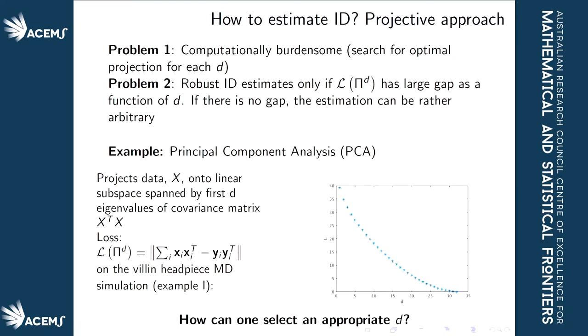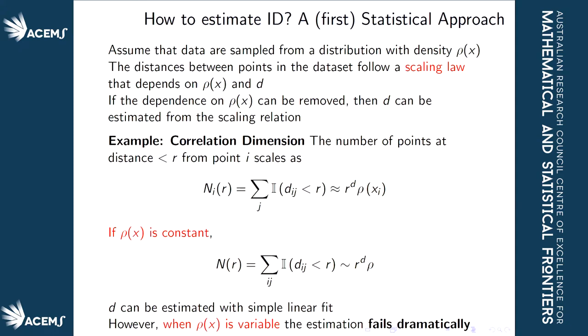We try a statistical approach, going back to the original relationship: rho is the density distribution of points, and there is a relationship that relates the number of points at distance r from a given point i to the distance, the density of points, and the intrinsic dimension d. If we assume rho is constant, then using the number of points within distance r can lead to an estimate of d by a simple linear fit, but the assumption of constant rho is very strong.